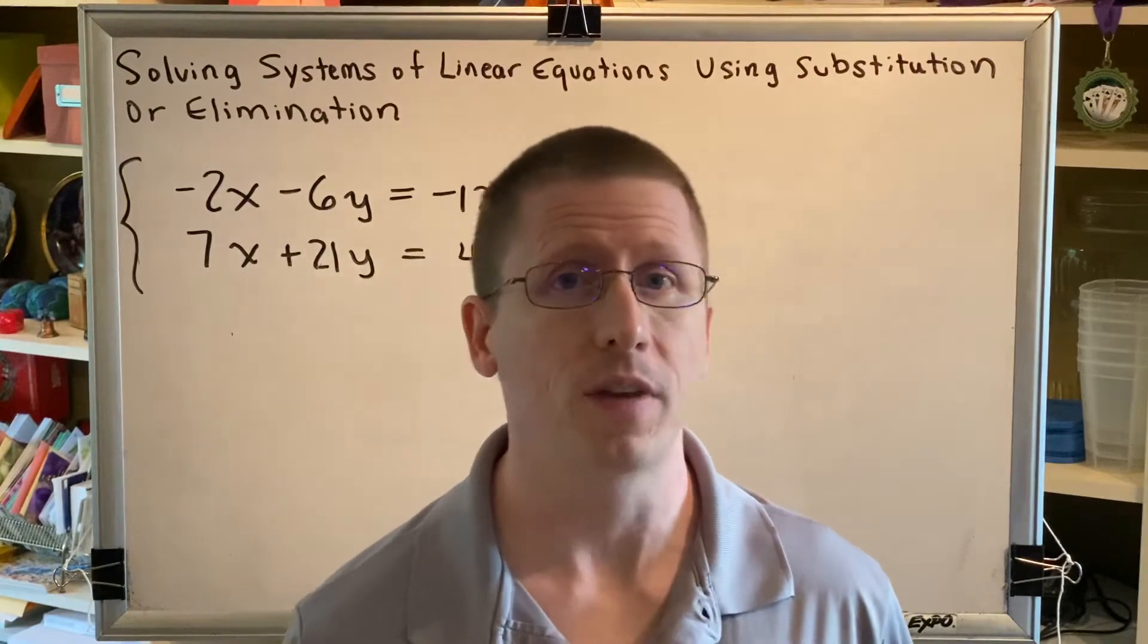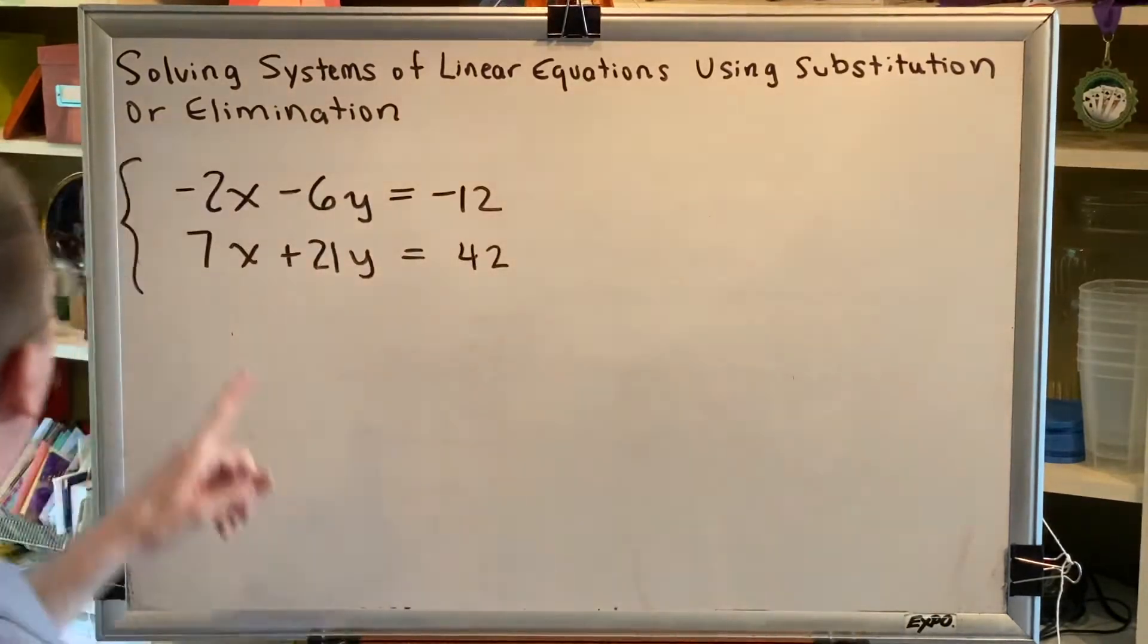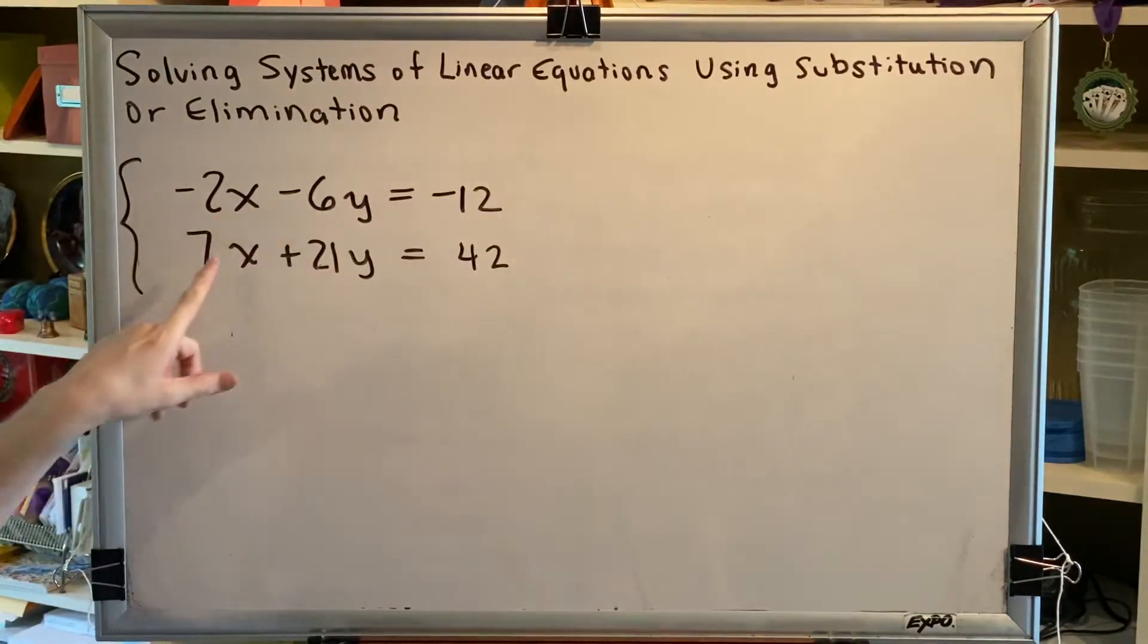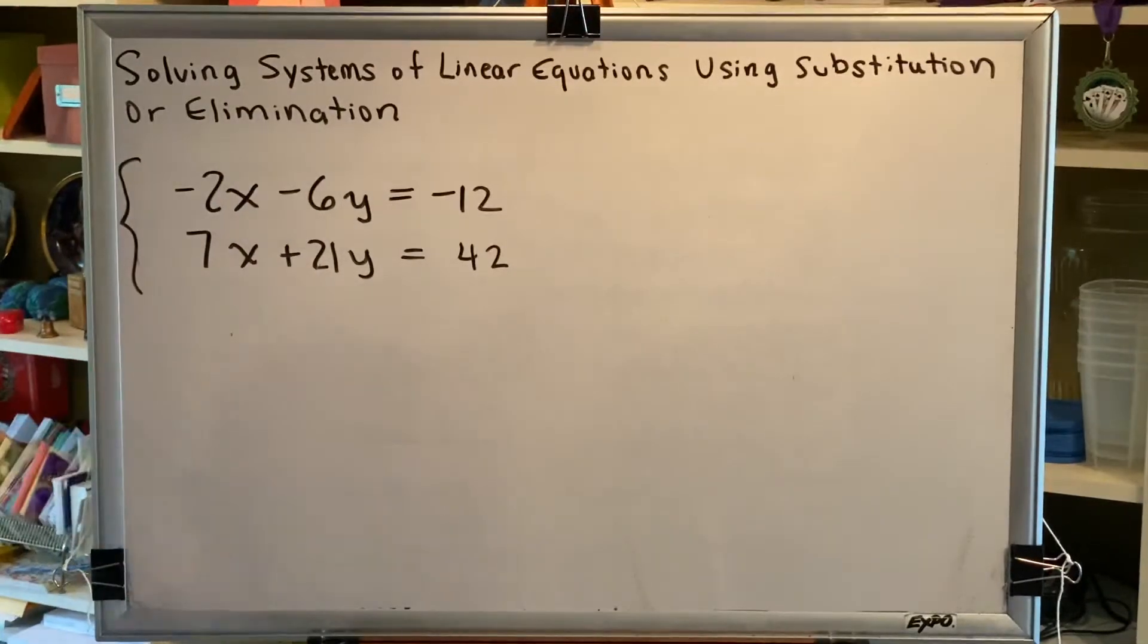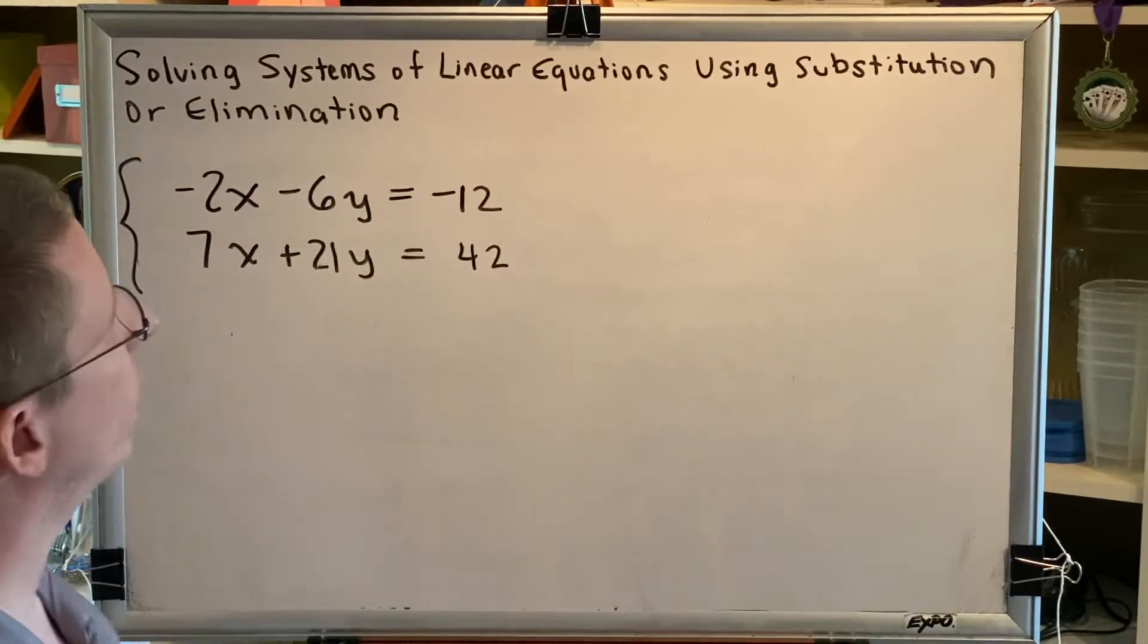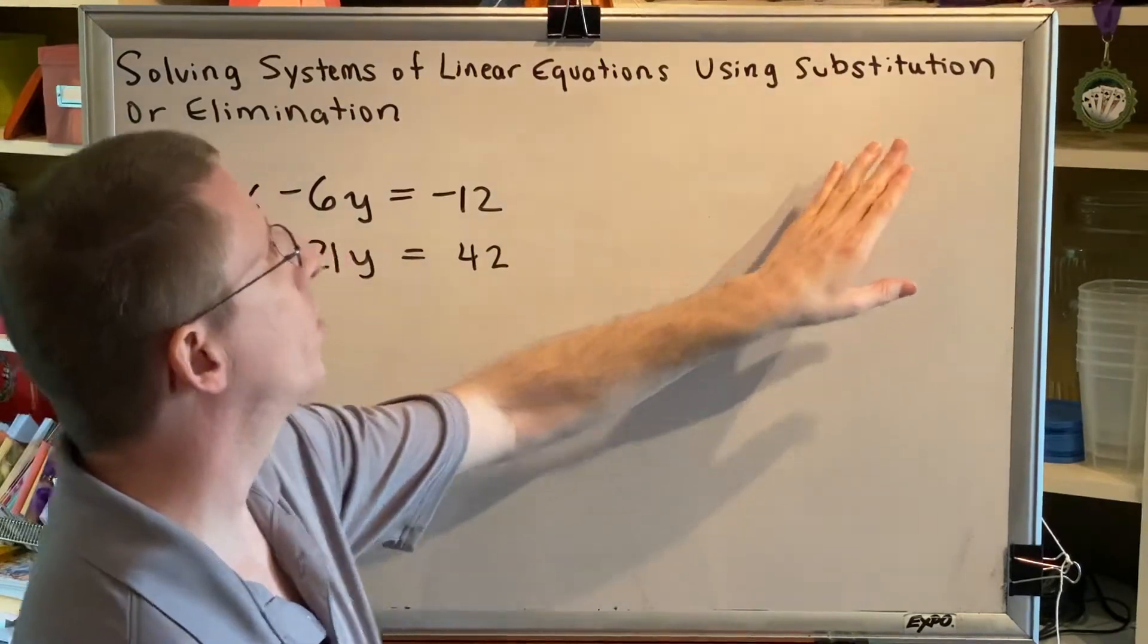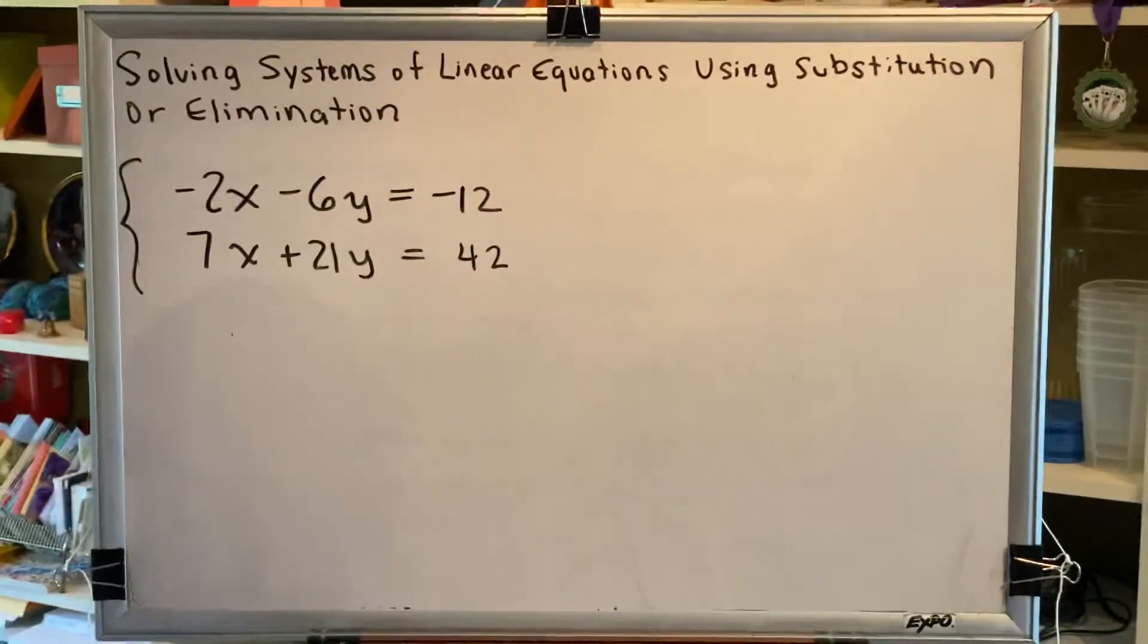Step two, look at the coefficients of the x and y terms. They are negative 2, negative 6, positive 7, positive 21. Since there are no 1s or negative 1s, we will not use substitution. Instead, we will use elimination.